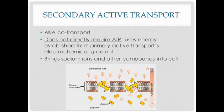Secondary active transport is also known as co-transport. Secondary active transport does not directly require energy — it does require energy, just not directly. Usually, secondary active transport will be hitching a ride on a primary active transport process, using the energy established from that first electrochemical gradient to fund the processes that are happening.